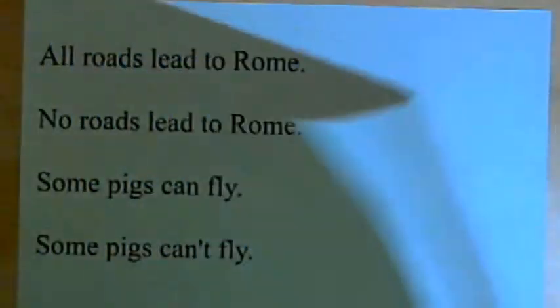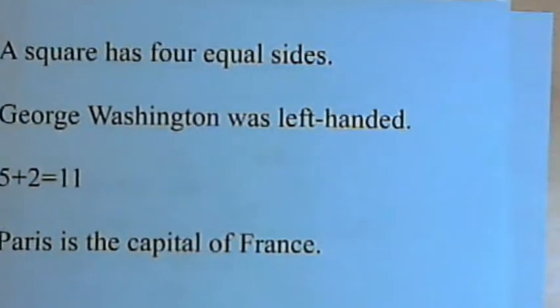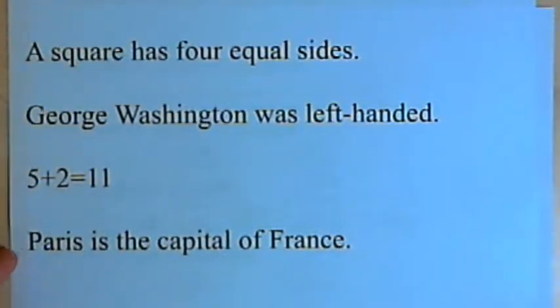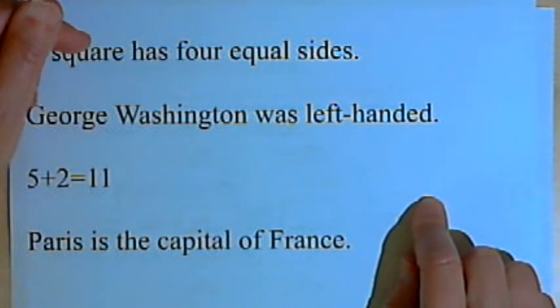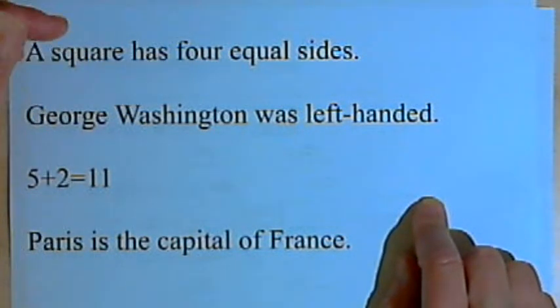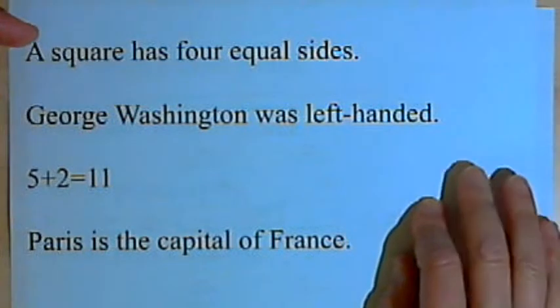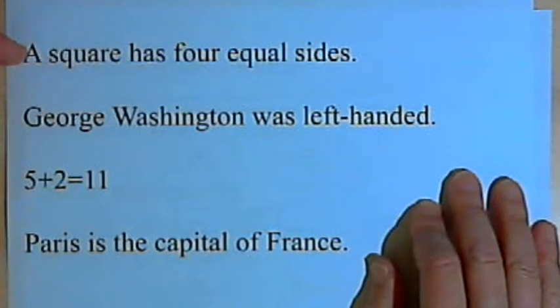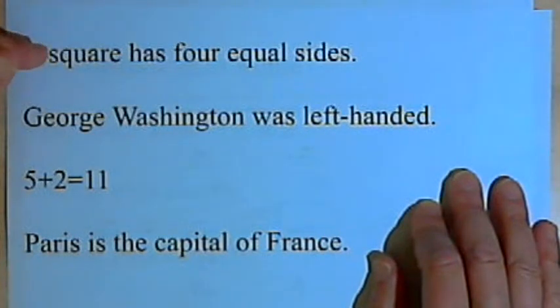So now we come to the issue of negating statements. In other words, we want to take a statement and say no, the opposite is the case. Typically we're going to use the word not. If I have a square has four equal sides, I can say a square does not have four equal sides. George Washington was left-handed, I say George Washington was not left-handed.